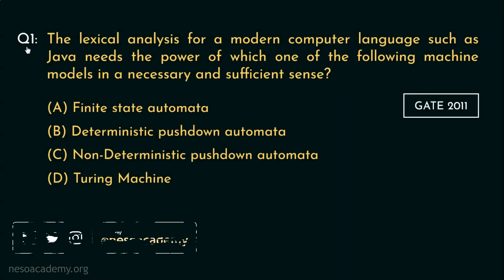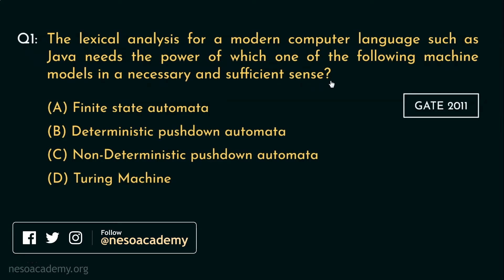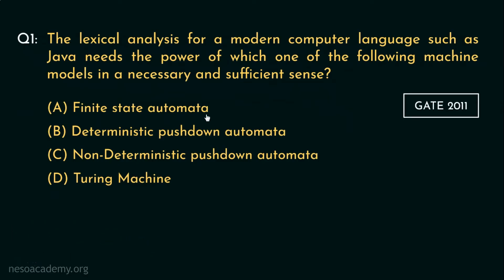Consider the first question. The lexical analysis for a modern computer language such as Java needs the power of which one of the following machine models in a necessary and sufficient sense. We are being asked which one of these machines is both necessary and sufficient for the lexical analysis phase. The options are: A. Finite state automata, B. Deterministic pushdown automata or DPDA, C. Non-deterministic pushdown automata or NPDA, and D. Turing machine.